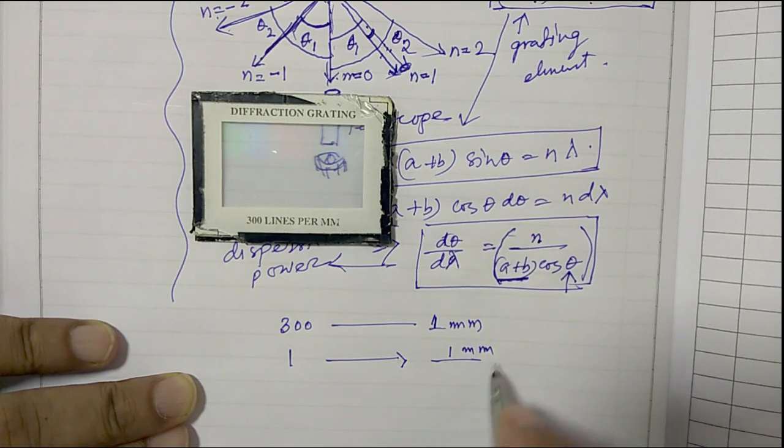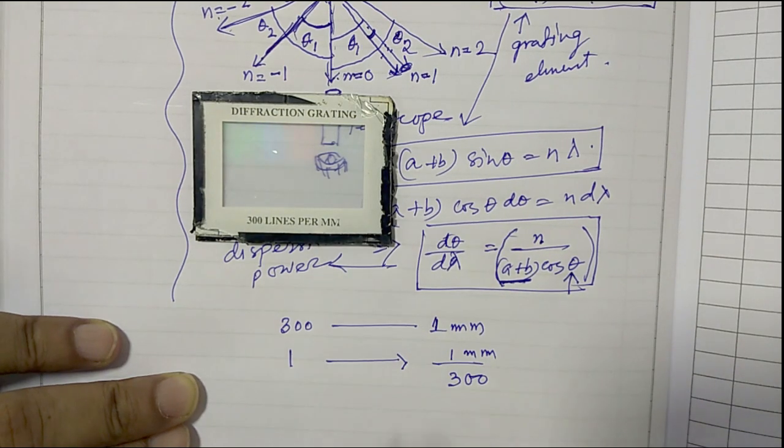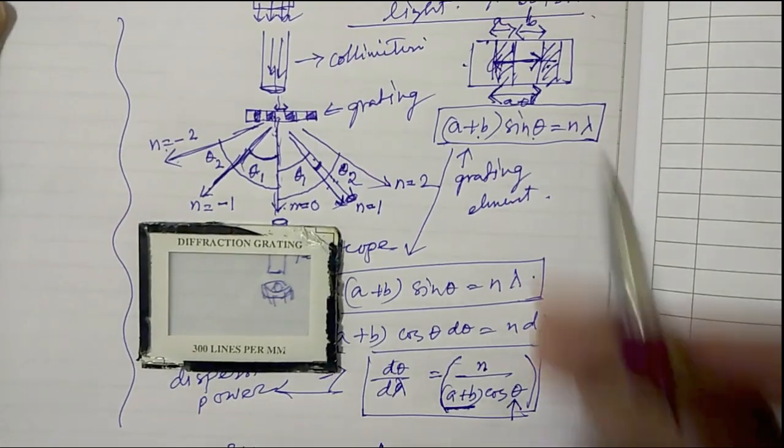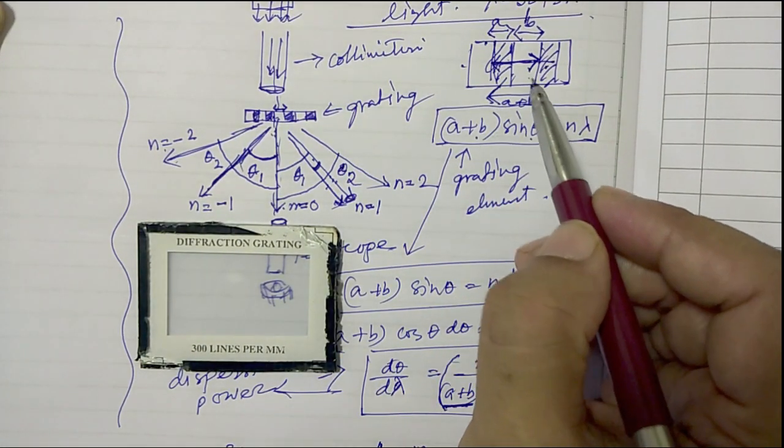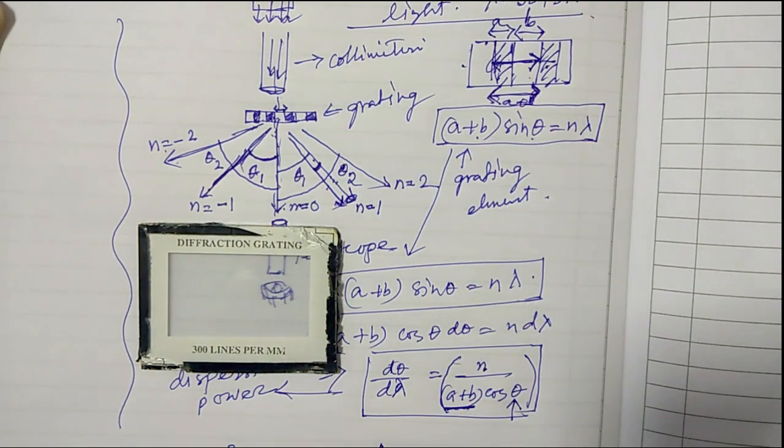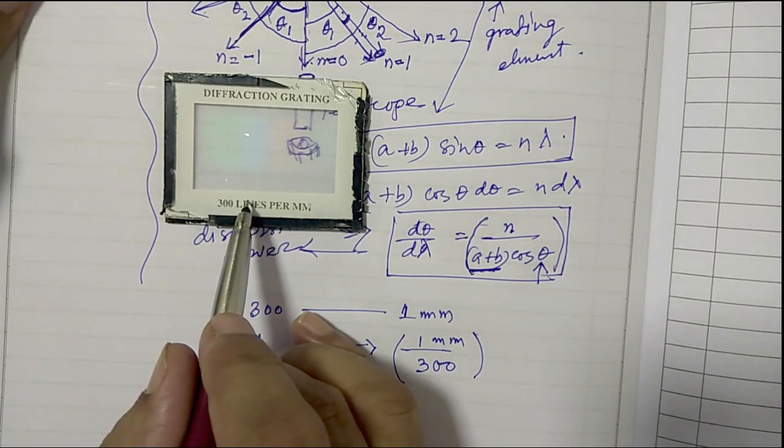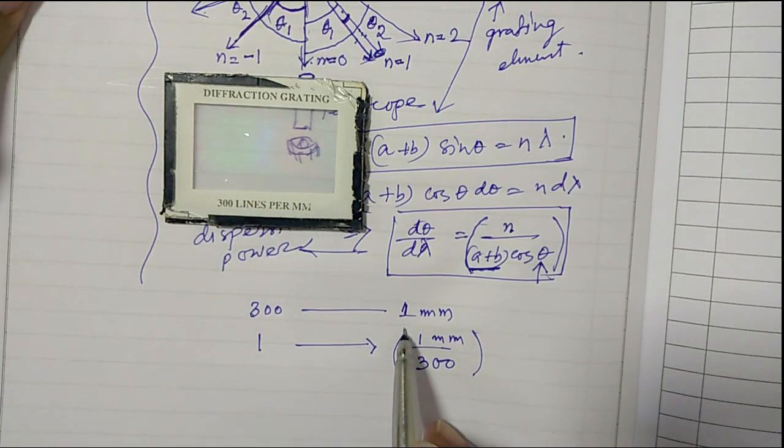And as I explained here, within one a plus b distance, you have one line, and that's what we have calculated here. One line for this diffraction grating is within this distance. So that's your grating element, that is a plus b.